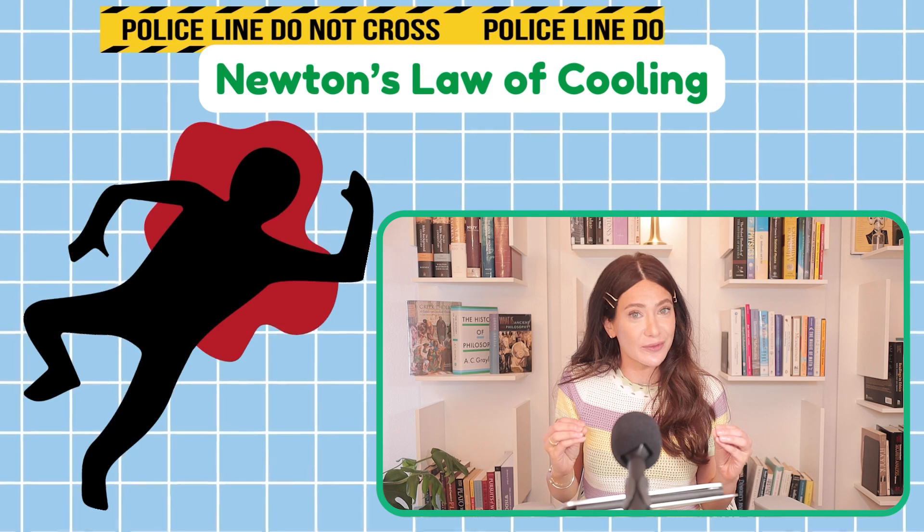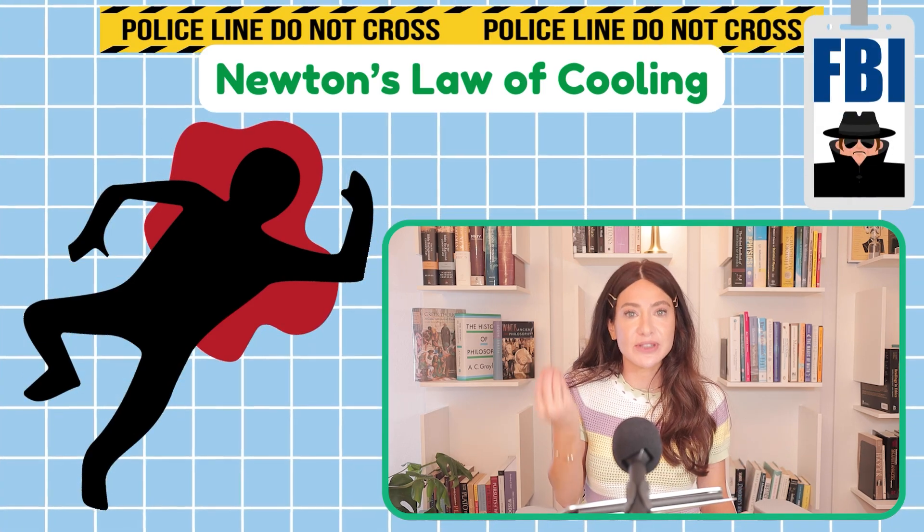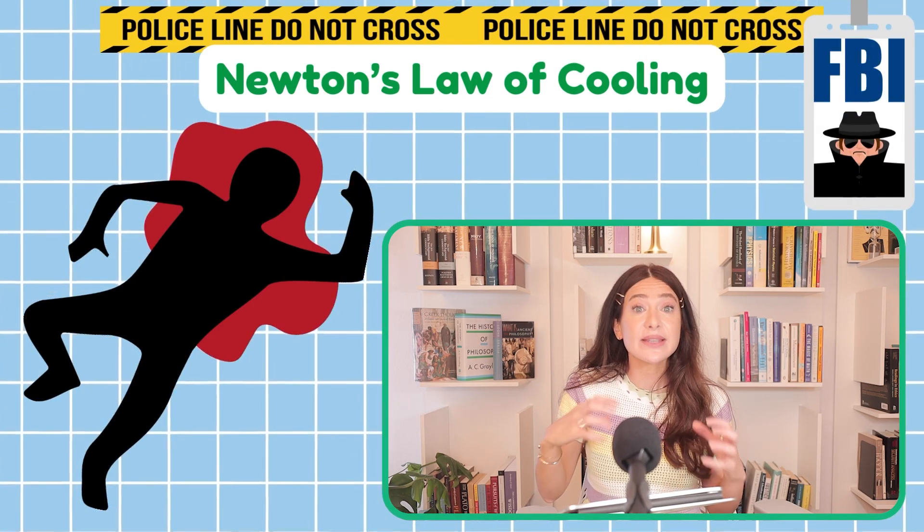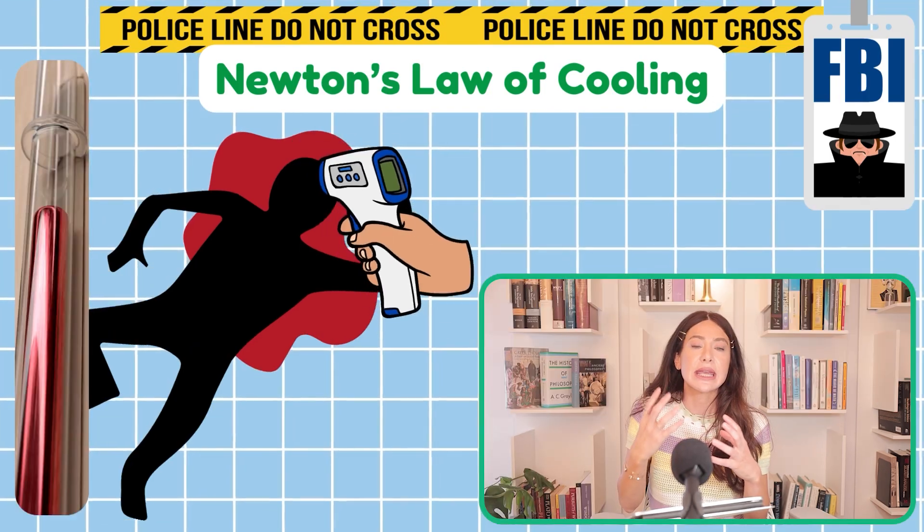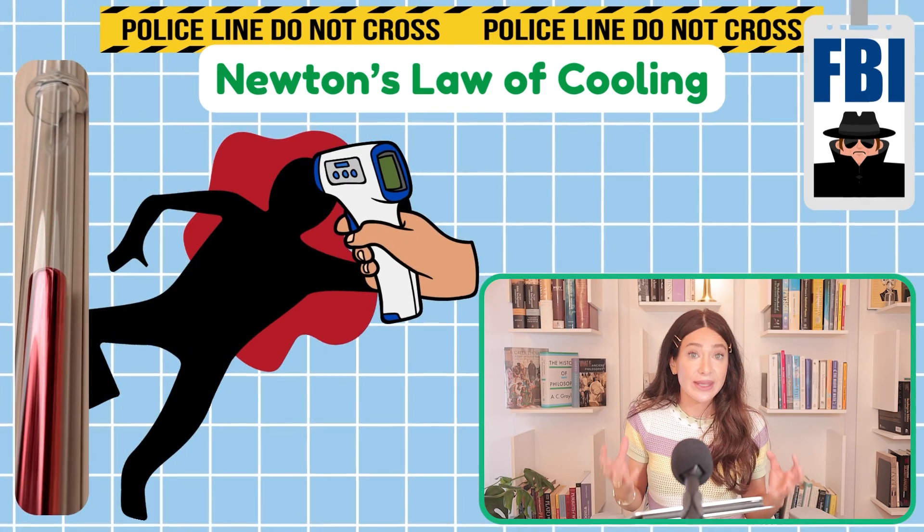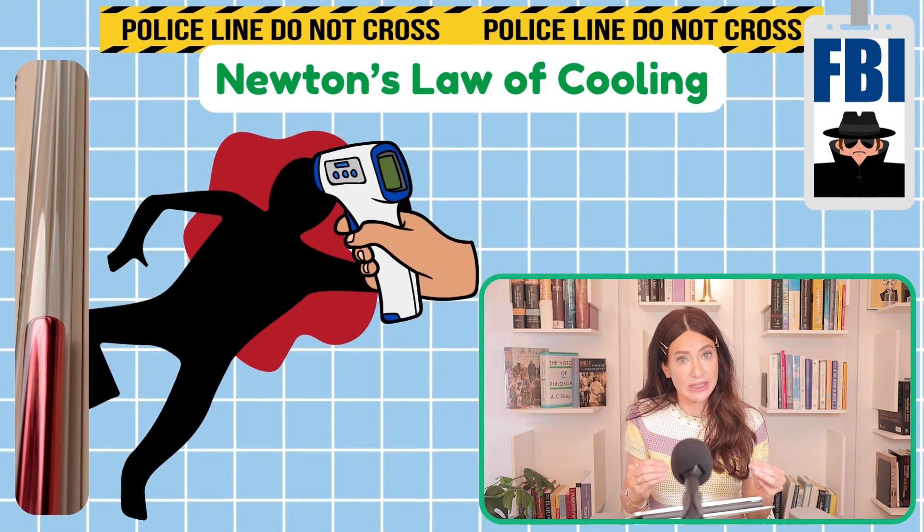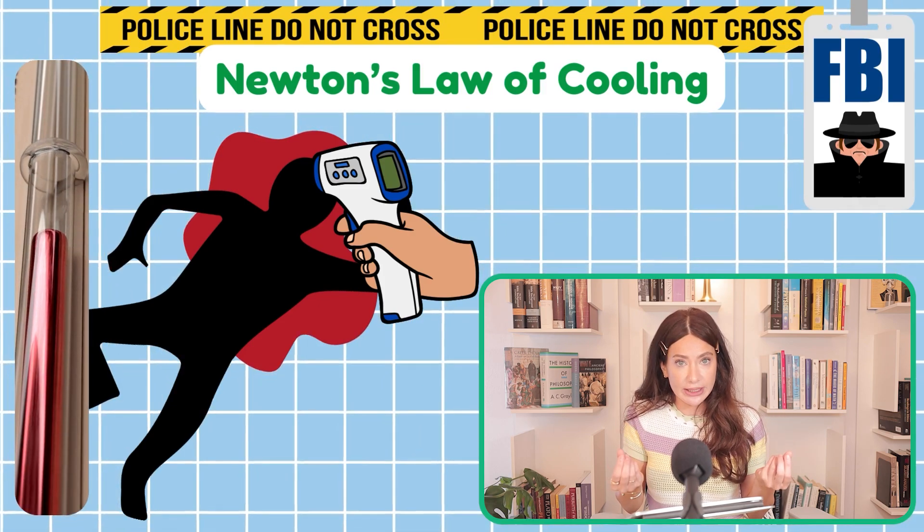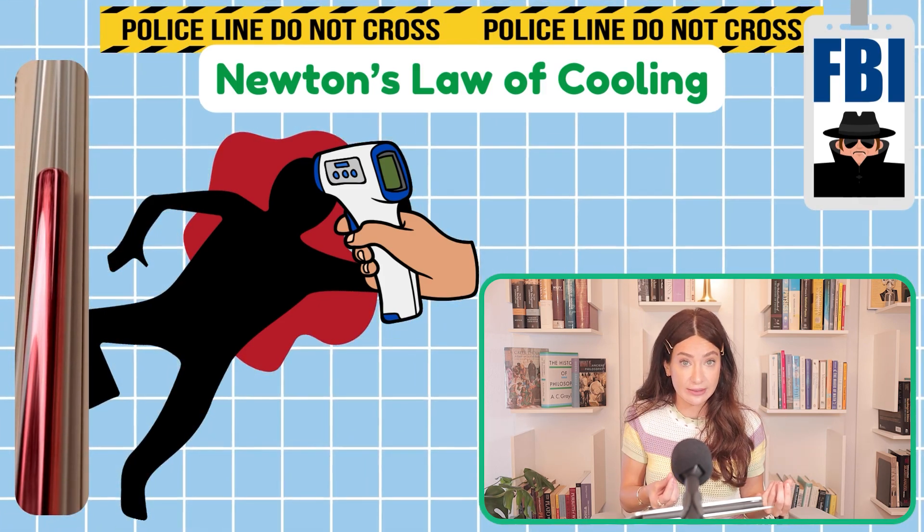We're going to use that formula to determine the time of death of a man based on change in the temperature of a body. That is what forensics teams do. They use Newton's law of cooling to determine the time of death.